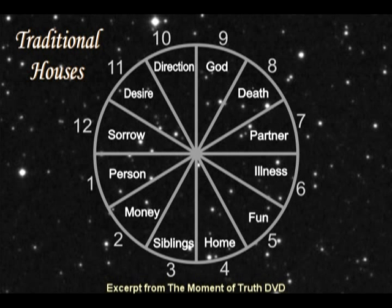The first basic chart has 12 fixed houses related to experience, and each number from 1 to 12 tells us the department or area of life by which that experience will take place. This wheel never moves — it is a fixed matrix.